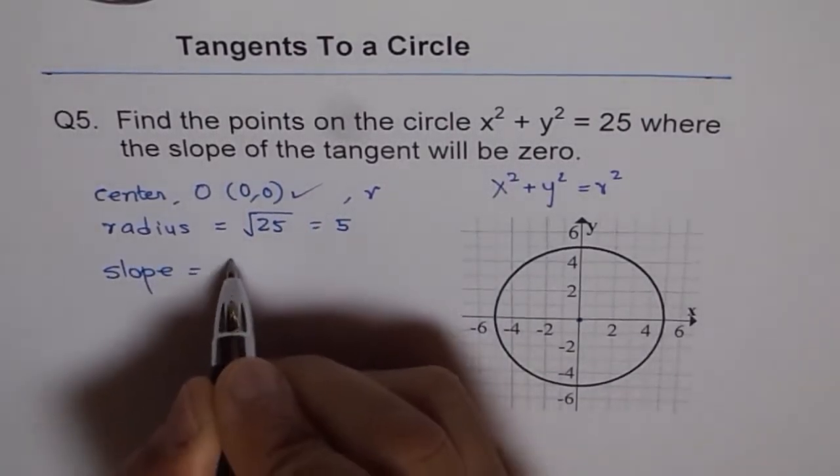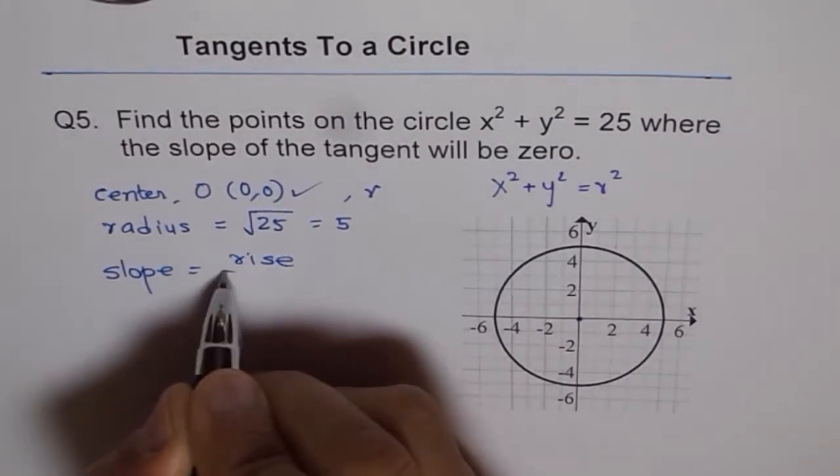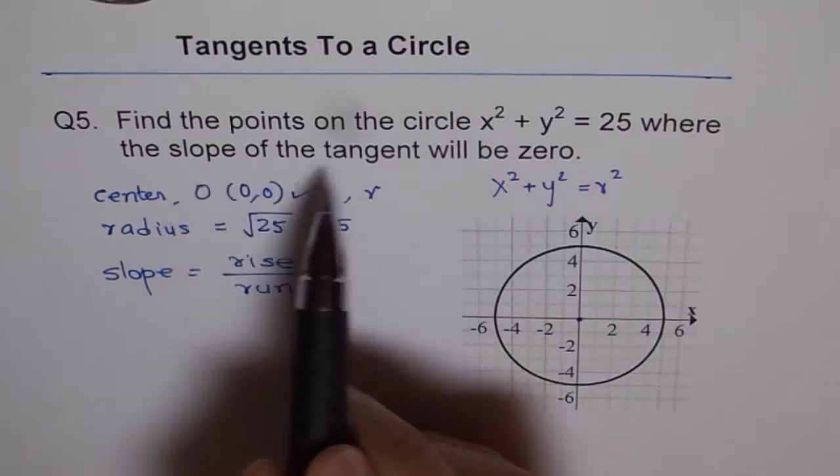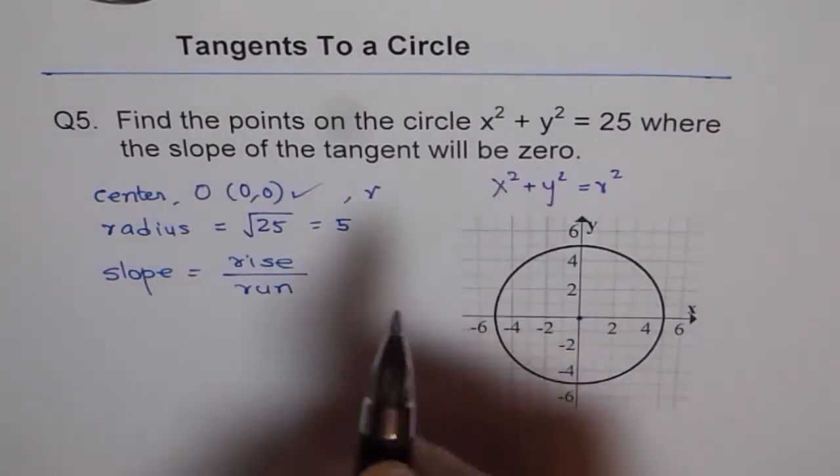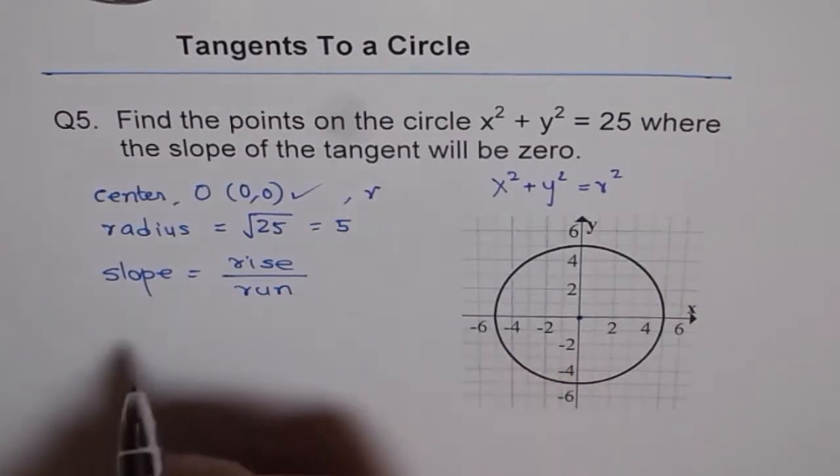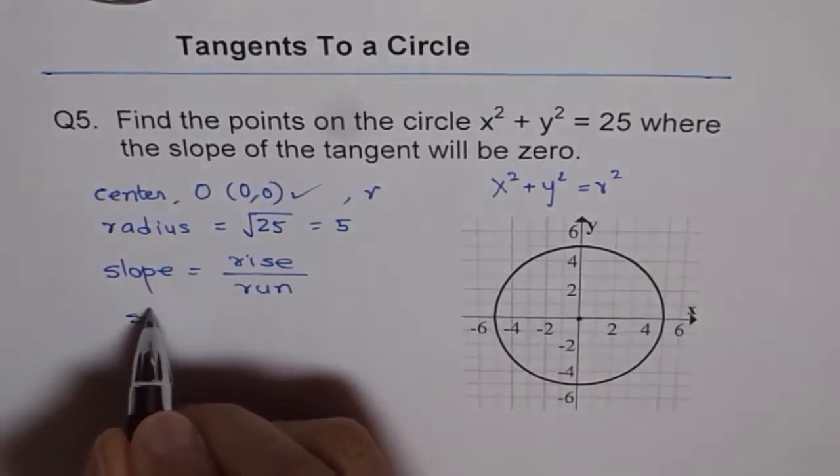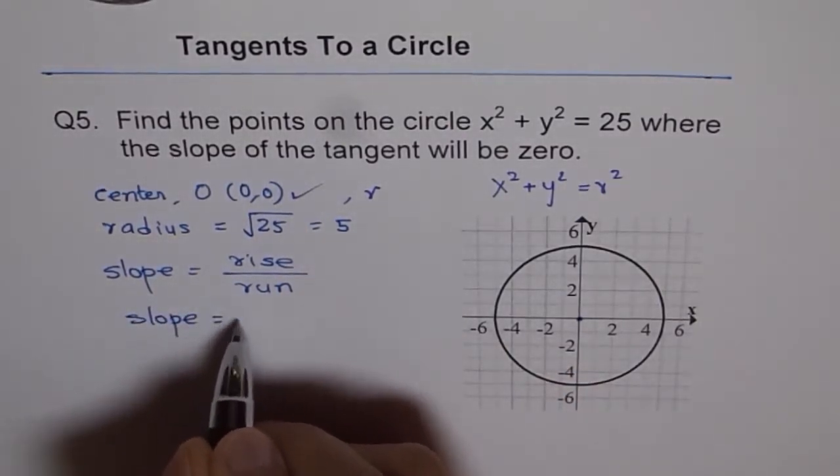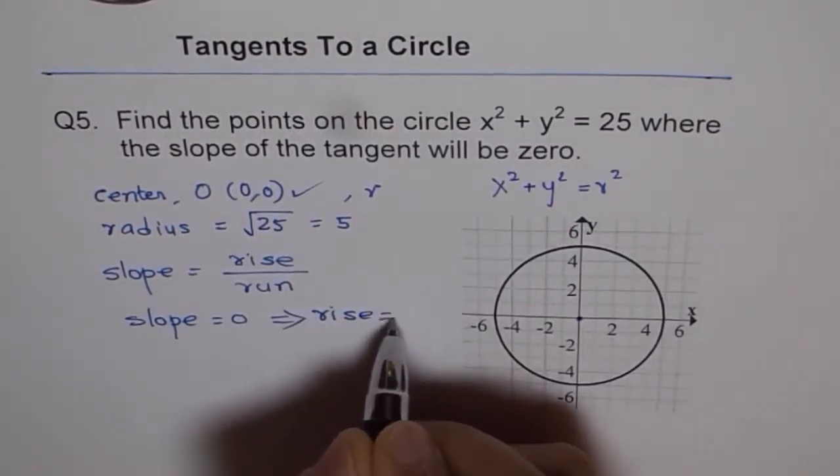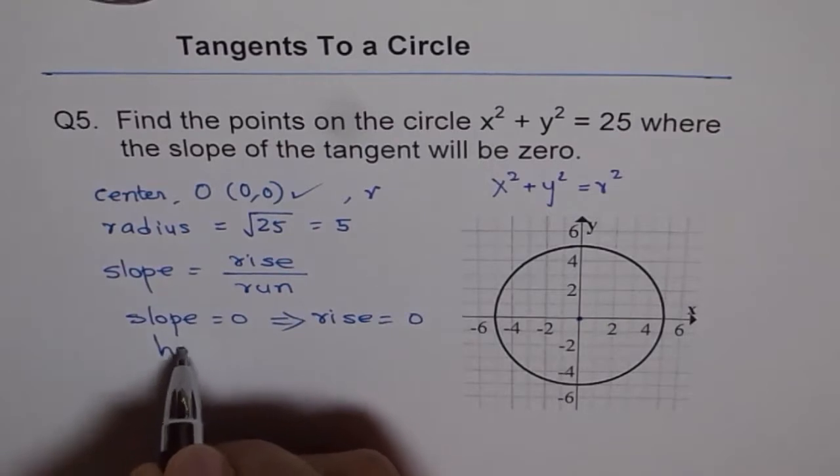Slope as you have learned already is rise over run. This is kind of a recap. So when we say the slope of tangent will be 0, that means rise has to be 0. Slope equals to 0, this implies rise is equal to 0. That means horizontal line.